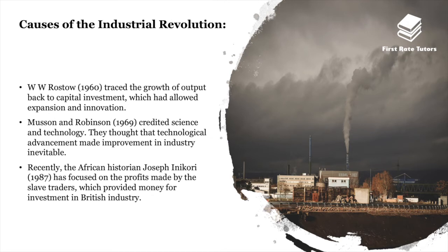W.W. Rostow in 1960 traced the growth of output back to capital investment, which allowed expansion and innovation. Musson and Robinson in 1969 credited science and technology, believing that technological advancement made improvement in industry inevitable. More recently, the African historian Joseph Inikori in 1987 focused on the profits made by slave traders, which provided money for investment in British industry.